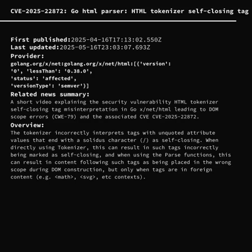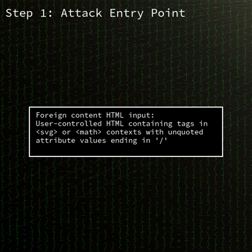Discovered in April 2025, this flaw can lead to incorrect parsing of certain tags in foreign content contexts like SVG and MathML, potentially resulting in misplaced DOM nodes and unexpected behavior in applications that rely on the Go HTML parsing library.